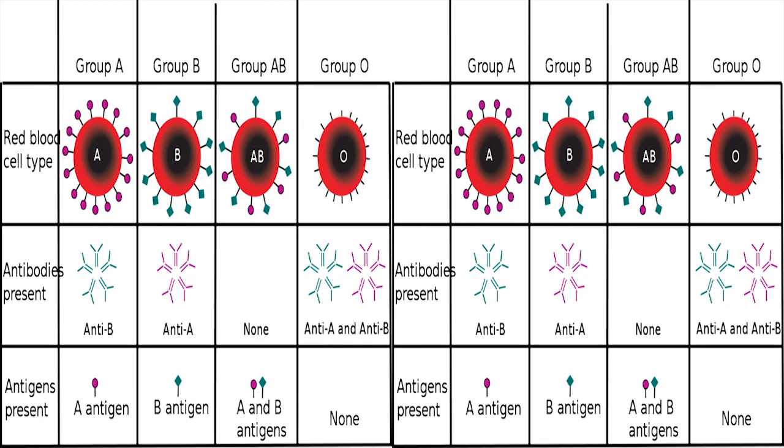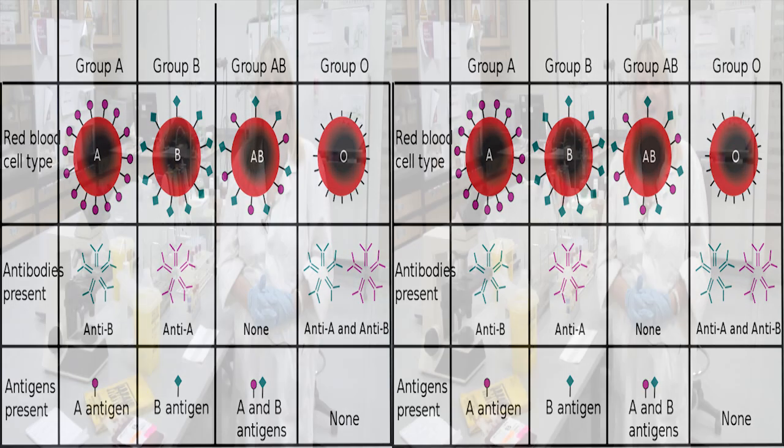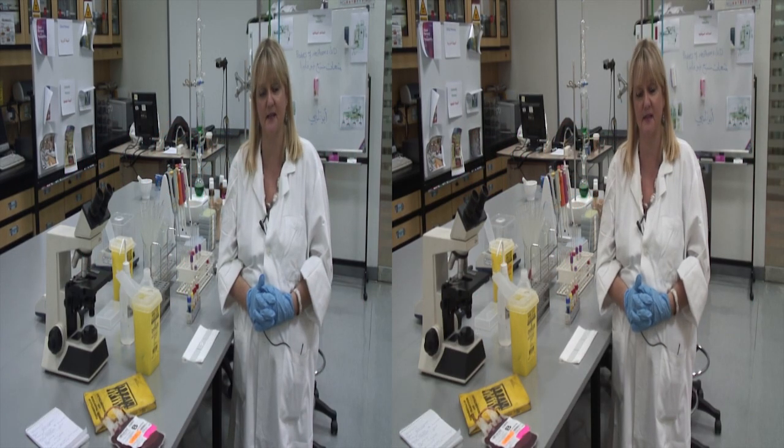A group AB person will have both A and B antigens on the red blood cell surface and because both are present, neither antibody will be present in the plasma. Lastly, a group O patient will have no antigens on the red blood cell surface and therefore have both anti-A and anti-B in the plasma.